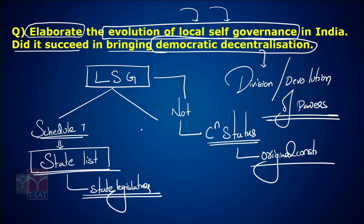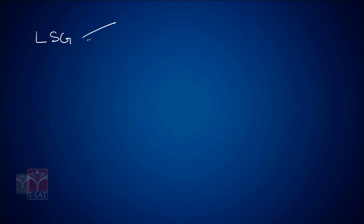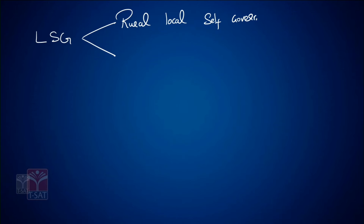The second provision is Article 40 of the Directive Principle of State Policy, which says it is the duty of the state to constitute local self-governance. Local self-governance is of two types: the first is rural local self-governance, and the second is urban local self-governance.